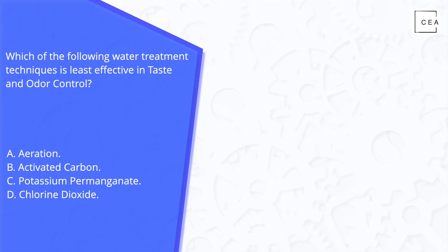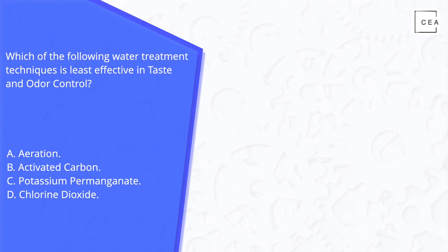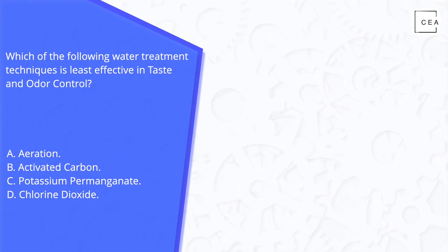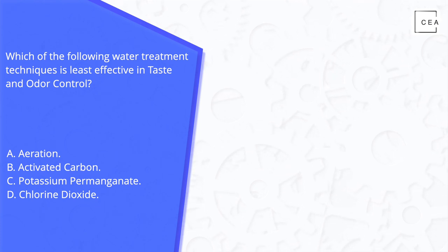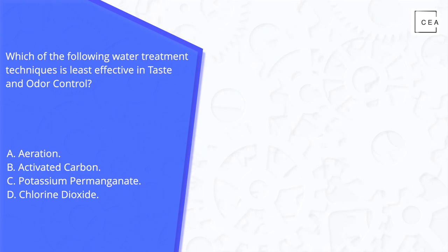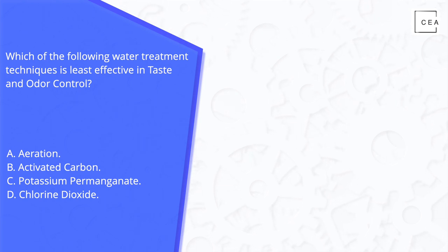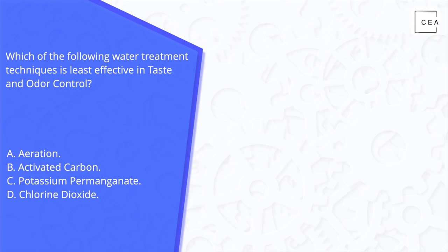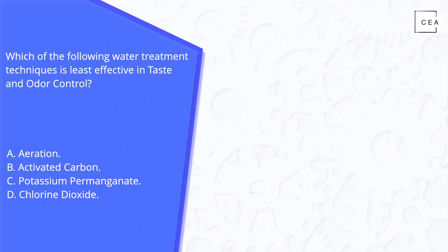The question asks: which of the following water treatment techniques is least effective in taste and odor control? A: aeration, B: activated carbon, C: potassium permanganate, or D: chlorine dioxide.